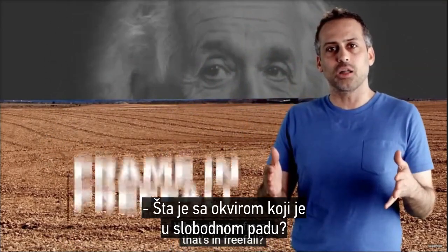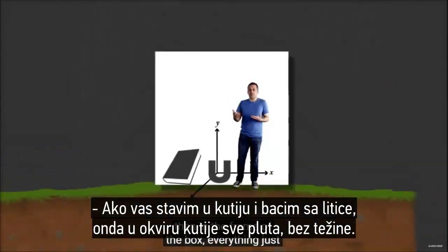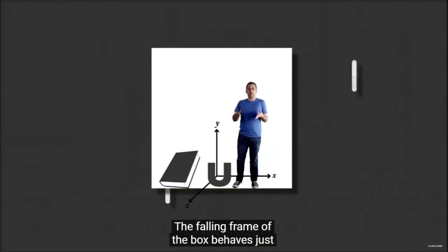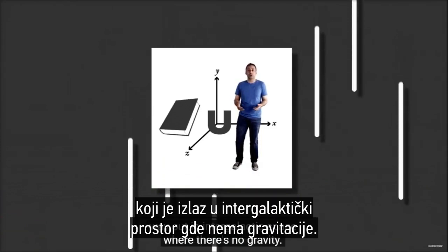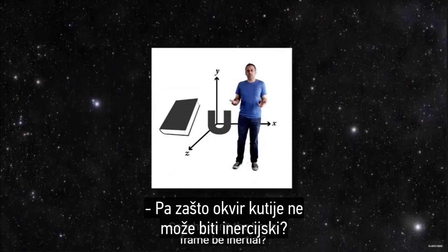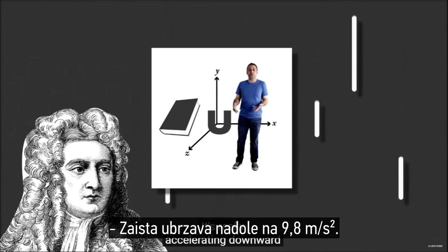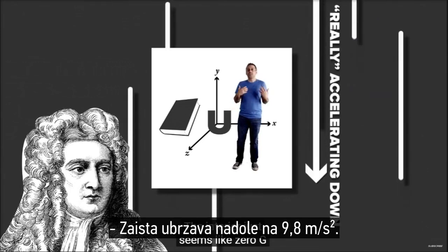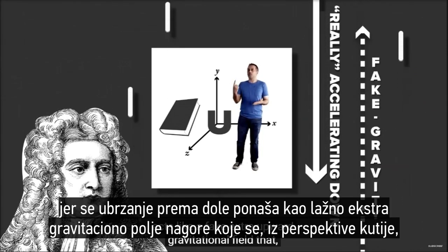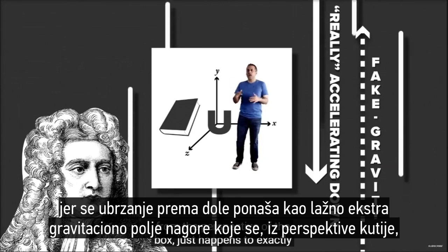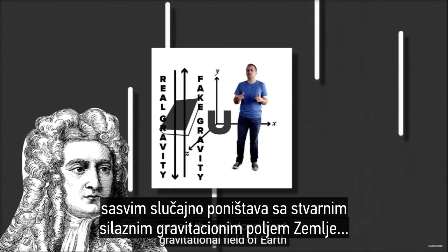Think about it. If I put you in a box and drop you off a cliff, then in the frame of the box, everything just floats weightless. The falling frame of the box behaves just like a stationary inertial frame that's way out in intergalactic space where there's no gravity. So why can't the box's frame be inertial? Well, Newton says that frame can't be inertial — it's really accelerating downward at 9.8 meters per second squared. The interior just seems like zero G because the downward acceleration acts like a fake extra upward gravitational field that, from the perspective of the box, just happens to exactly cancel the real downward gravitational field of Earth by coincidence.